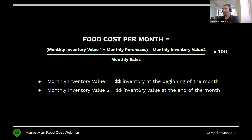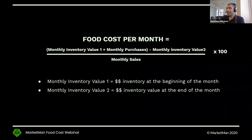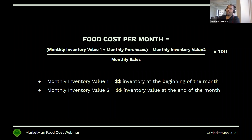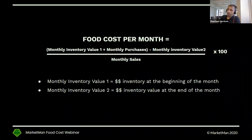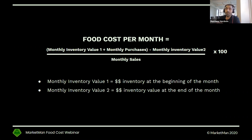The next measurable you're interested in calculating is your food cost per month. This most closely resembles your COGS or your gross profitability, expressed as food cost per month. Instead of looking at it on a per menu item basis, we're taking total inventory values and putting it over sales. So we open our inventory count at the beginning of the month, add everything we're buying during the month, subtract what we counted at the end of the month, put all of that over our total monthly sales figure, and multiply by 100. That gives us our food cost per month.